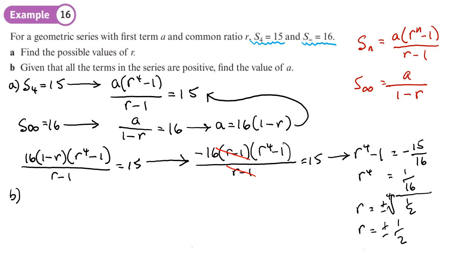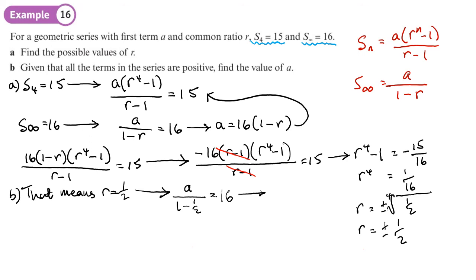Part b says all the terms are positive, so r must be positive, meaning r = one half (not negative one half). Substituting into the sum to infinity formula: a over (1 minus one half) = 16, so a over one half = 16, giving a = 8. So a equals 8 and r equals one half. You should now be able to do exercise 3E on pages 75 to 76 of the textbook.